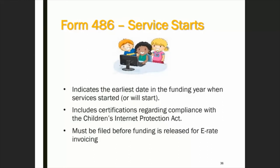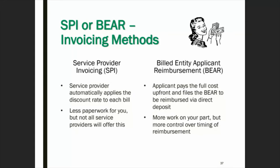The Form 486 is a much-reviled form because it doesn't seem necessary — there are arguments its information should be rolled into the application form. However, it's another required step before you can get your E-Rate discounts. You're just telling USAC that the services that got approved on the application have started or will start, and that you comply with CIPA if required. You have to have the Form 486 on file in order for your vendor to apply discounts or for you to file an invoicing form for reimbursements.